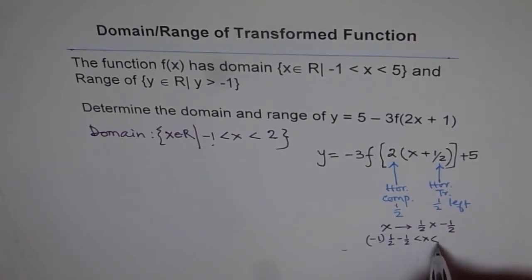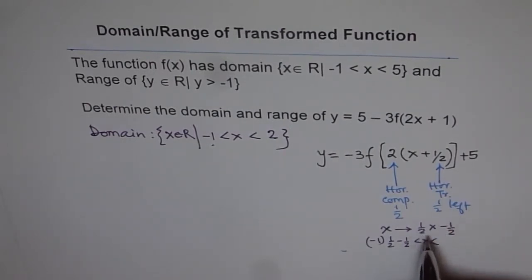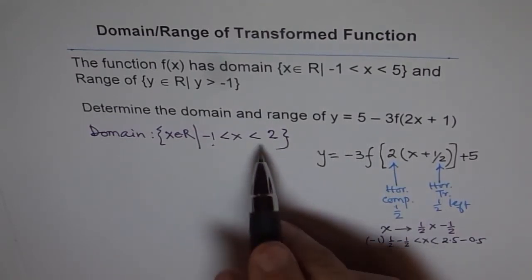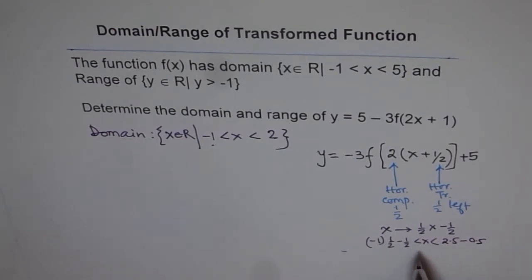So this was x and this side was half of five, which is 2.5 minus 0.5. So I get two. Do you see that? So that is how I got my domain. And now let's look into range.